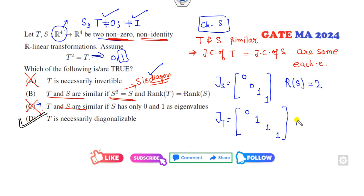If I write the Jordan block corresponding to S and the Jordan block corresponding to T, then it is not similar, but rank of S is 2 and rank of T is 3. When is it possible? Only when this value must be 0 or this value must be 1. Whenever the ranks are same and both are diagonalizable, then they are similar. So B and D are the correct answers.